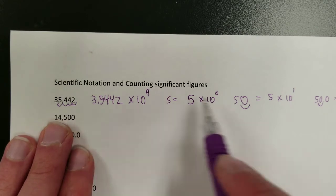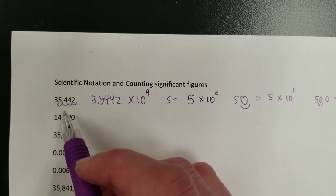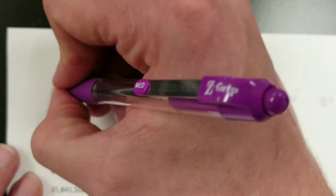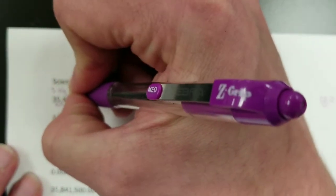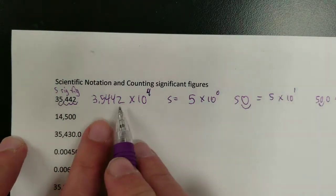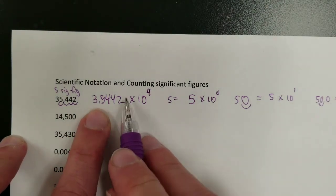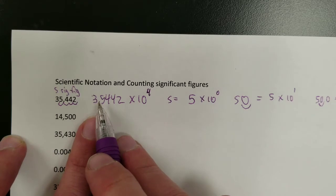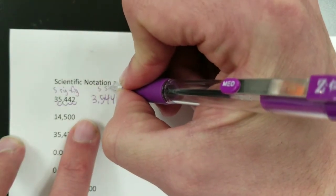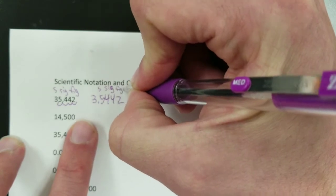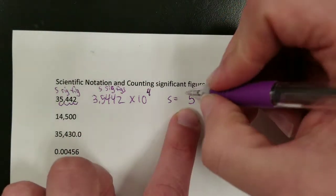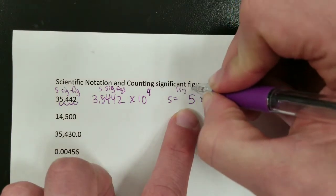Significant figures is simply the number of how many digits are in the number — 1, 2, 3, 4, 5 significant figures. 5 sig figs — my favorite abbreviation for significant figures. Scientific notation only shows significant figures, so that's also 5 sig figs. And then there's one significant figure, and you'll notice the scientific notation also has one significant figure.